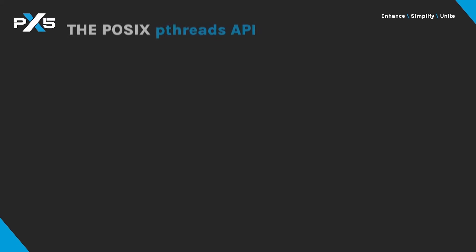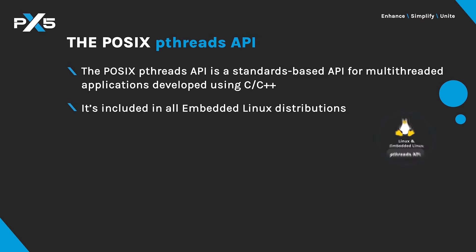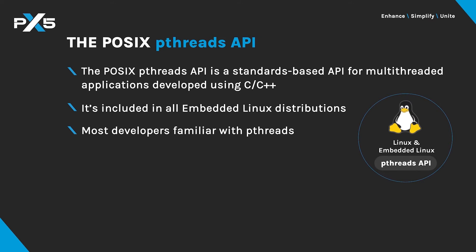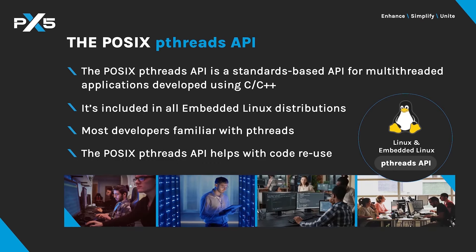For real-time multi-threaded embedded applications, embedded Linux includes the POSIX PThreads API, a standards-based interface to the services needed in such systems. The PThreads API is included in all embedded Linux distributions. As a result, most embedded developers are already familiar with PThreads, many have used it in their development work, and as a POSIX standard, it's beneficial for code reuse from project to project.